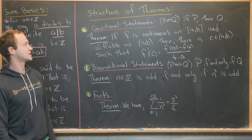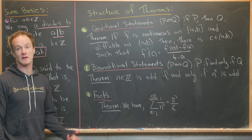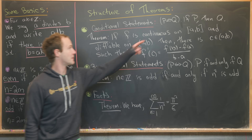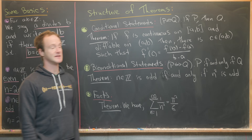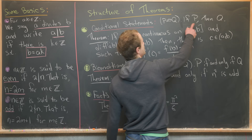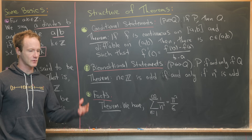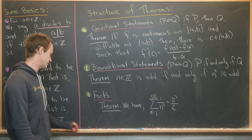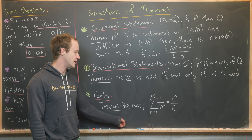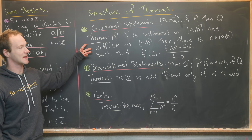The first type are conditional statements, and that's what we'll start proving later in this video. These are of the form P implies Q, often written as 'if P, then Q.' In other words, if statement P is true, then statement Q is also true. Here's an example.